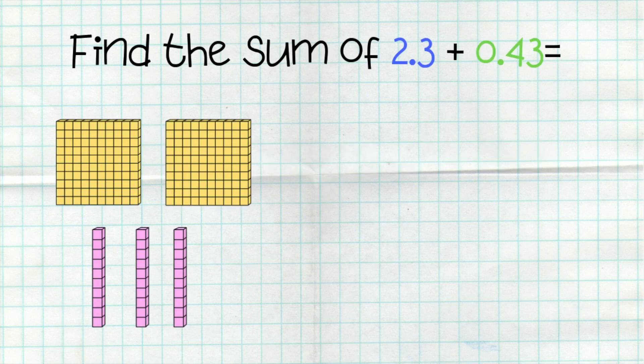So, modeling with my base 10 blocks, here I am taking the number in blue, 2.3. I am going to represent my two wholes with my base 10 blocks and my three-tenths. Because I have three in the tenths place, I have three-tenths represented, and I have two wholes in the ones place.